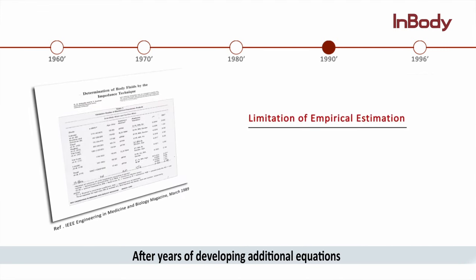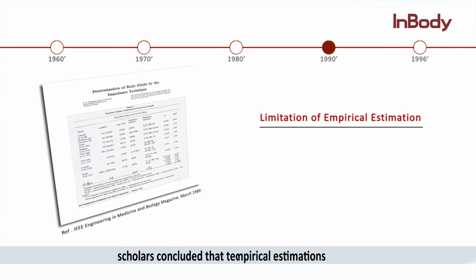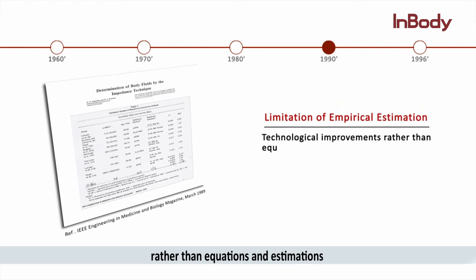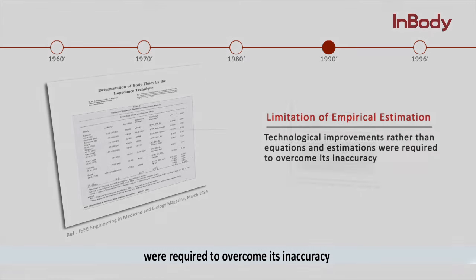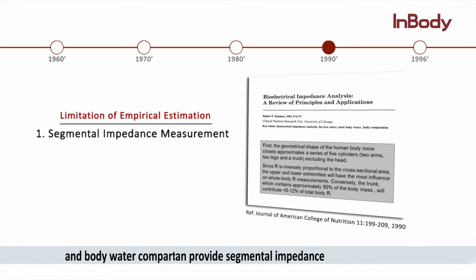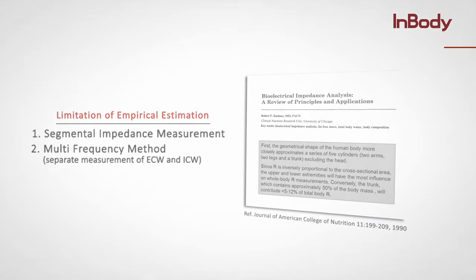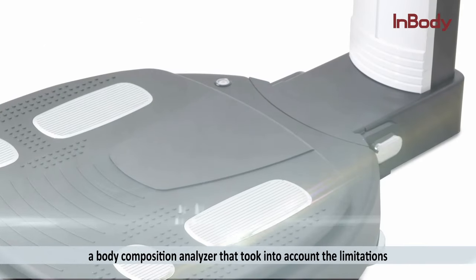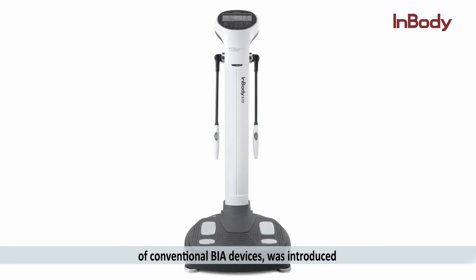After years of developing additional equations and incorporating empirical estimations, scholars concluded that technological improvements — rather than equations and estimations — were required to overcome the inaccuracy. BIA required technology that could provide segmental impedance and body water compartment measurements using a multi-frequency method. Then in 1996, the InBody, a body composition analyzer that took into account the limitations of conventional BIA devices, was introduced.